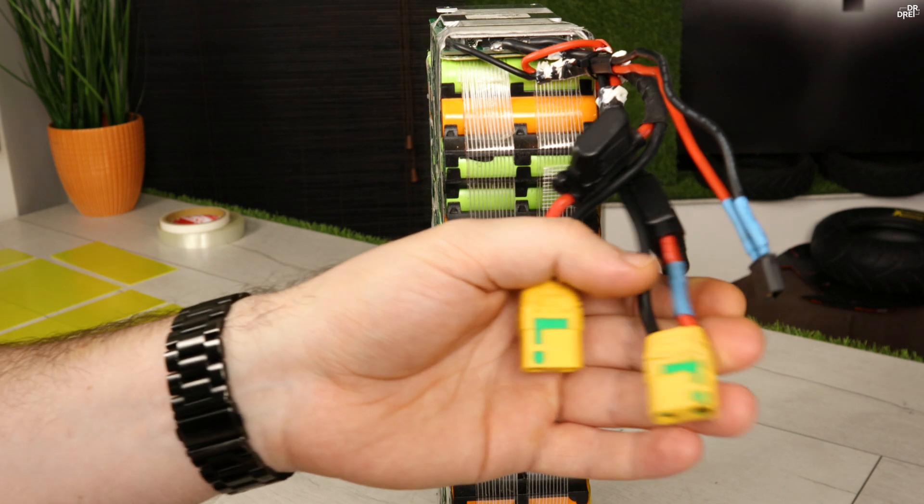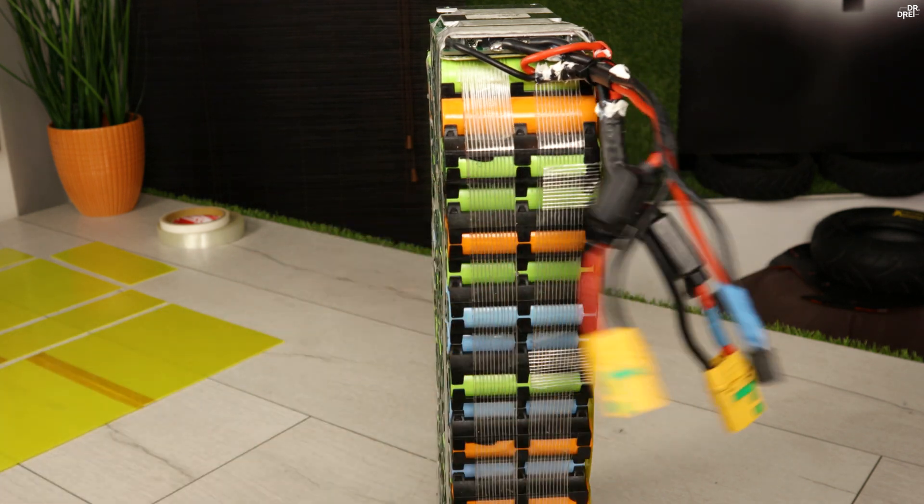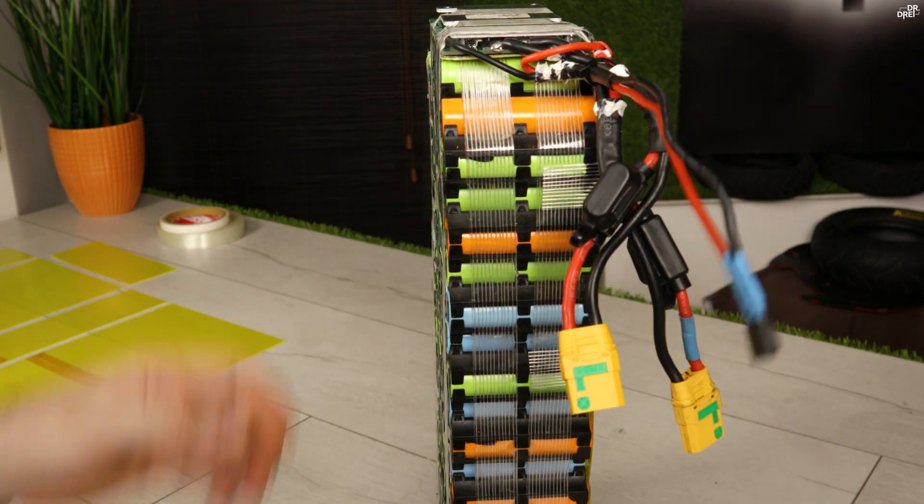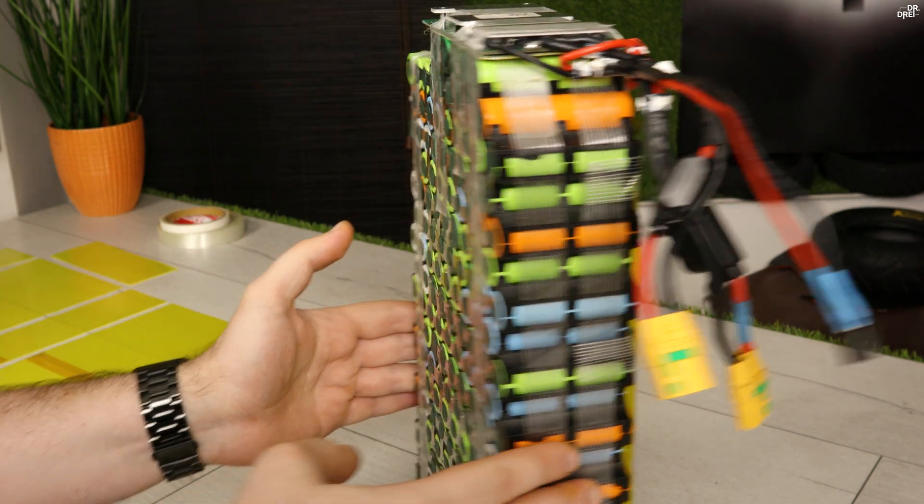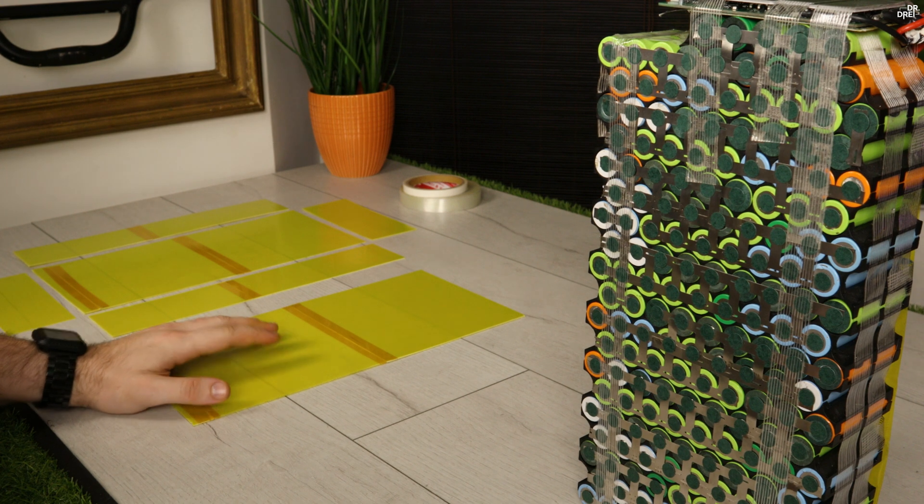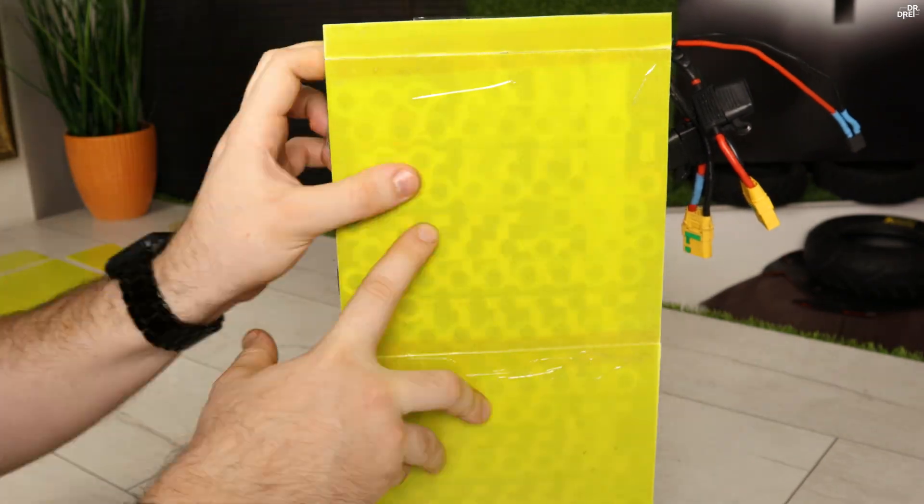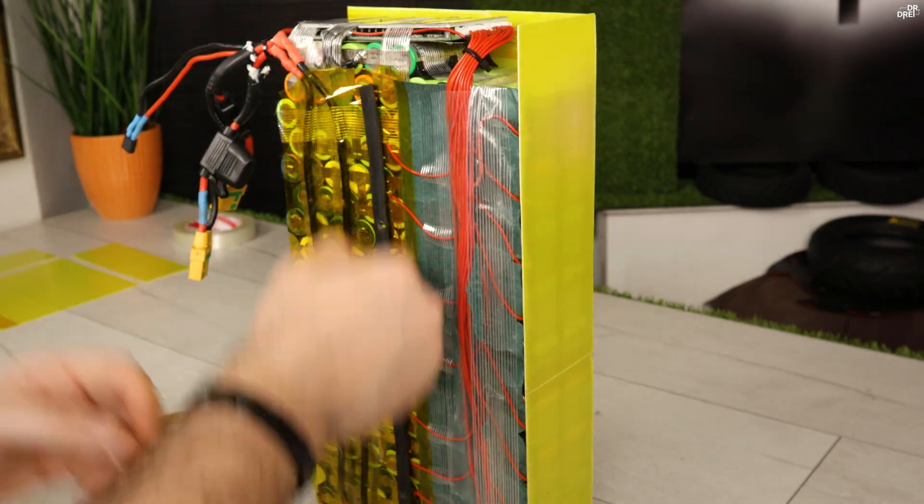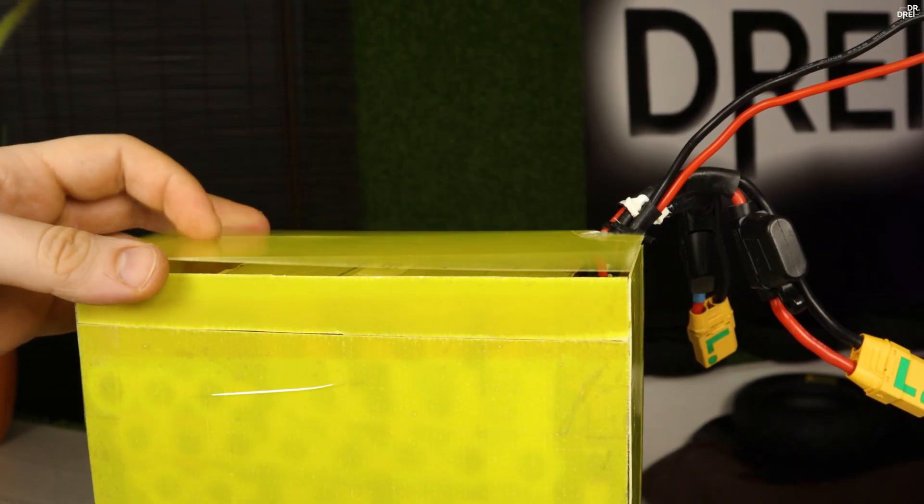Got some anti-spark XT90 connectors for discharge and one XT30 for charging. Even though I have 3 charging ports on the scooter, I think I'm only going to use one 5A charger. And now comes the tricky part where I have to wrap it up and check if it fits on the scooter. I did make some measurements but you never know until you try it.